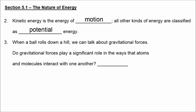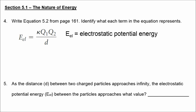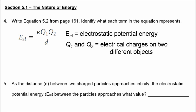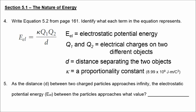When a ball rolls down a hill, we can talk about gravitational forces, but gravitational forces do not play a significant role in the way that atoms and molecules interact with one another. On page 161, they give you an equation where E represents the electrostatic potential energy, Q1 and Q2 are electrical charges on two different objects, d is the distance separating those objects, and K is a proportionality constant with units of joules·meters per square coulomb. As the distance between two charged particles approaches infinity, the electrostatic potential energy between the particles approaches zero.